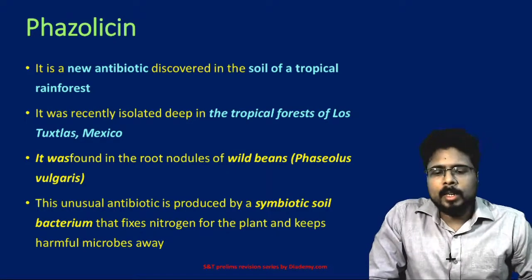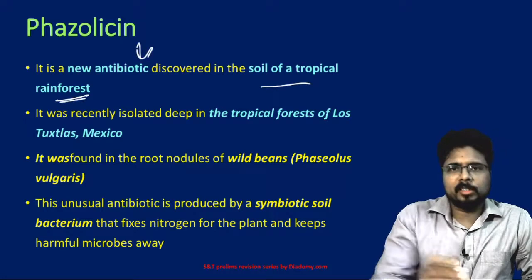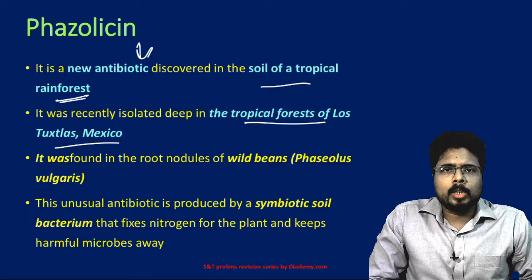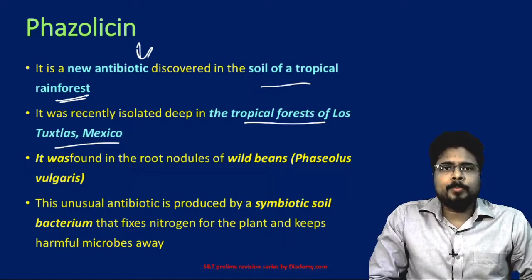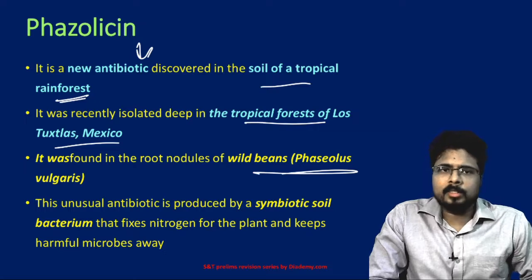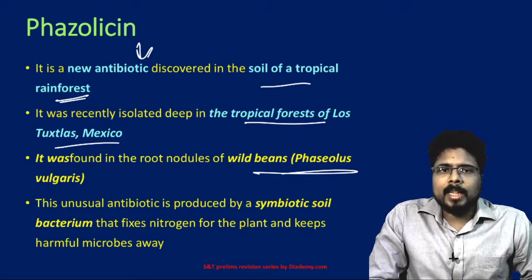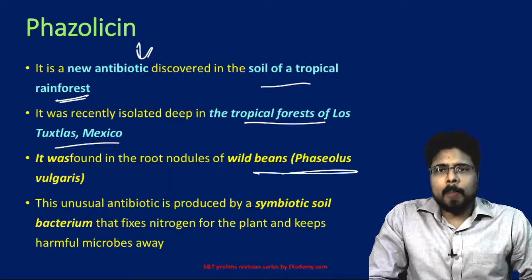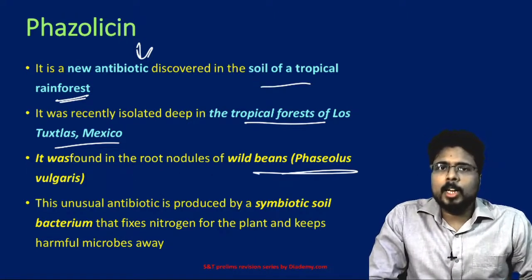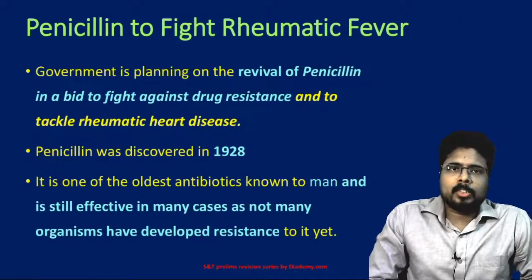Fasolation is a new antibiotic discovered in the soils of tropical rainforest. It was recently isolated deep in the tropical forest of Los Tuxtlas in Mexico. It was found in the root nodules of wild beans, also called Phaseolus vulgaris. This unusual antibiotic is produced by a symbiotic soil bacterium that fixes nitrogen for the plants and keeps harmful microbes away.